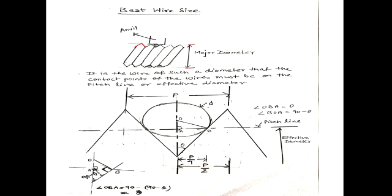If D is the diameter of the wire and P is the pitch of the screw thread. P is the pitch of the thread and distance from here to here, it will be P by 2, half of the pitch. And AB will be P by 4.